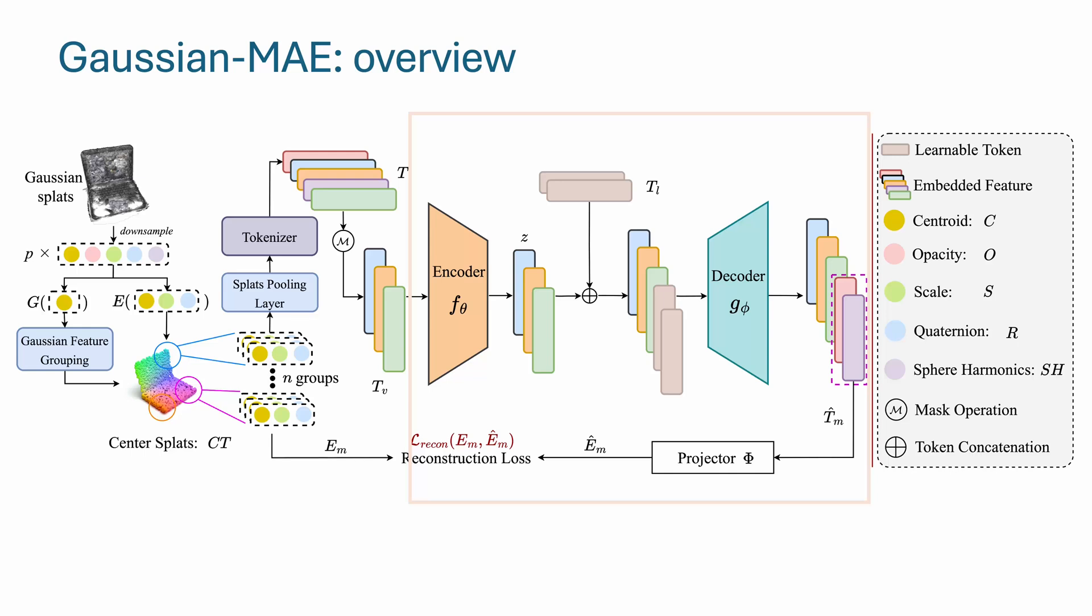Finally, we enter the masked autoencoder training. The visible tokens are passed through the encoder. The decoder's job is to reconstruct the masked tokens. After that, several projectors recover the Gaussian attributes that are used for embedding.